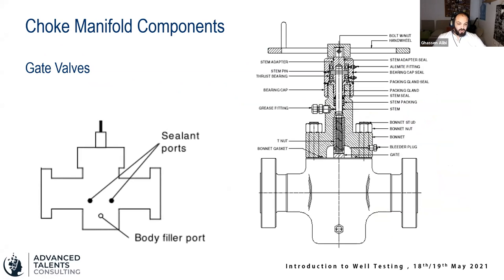Controlling the flow — opening and closing the choke manifold — is done through gate valves. A gate valve is essentially a slab of metal with a hole in it. If the hole lines up with the flow path, the well flows; if it's raised to block flow, the well is shut in. Gate valves are used because they allow higher pressures — up to 5,000, 10,000, or even 15,000 PSI — and have excellent sealing properties, making them an industry standard.